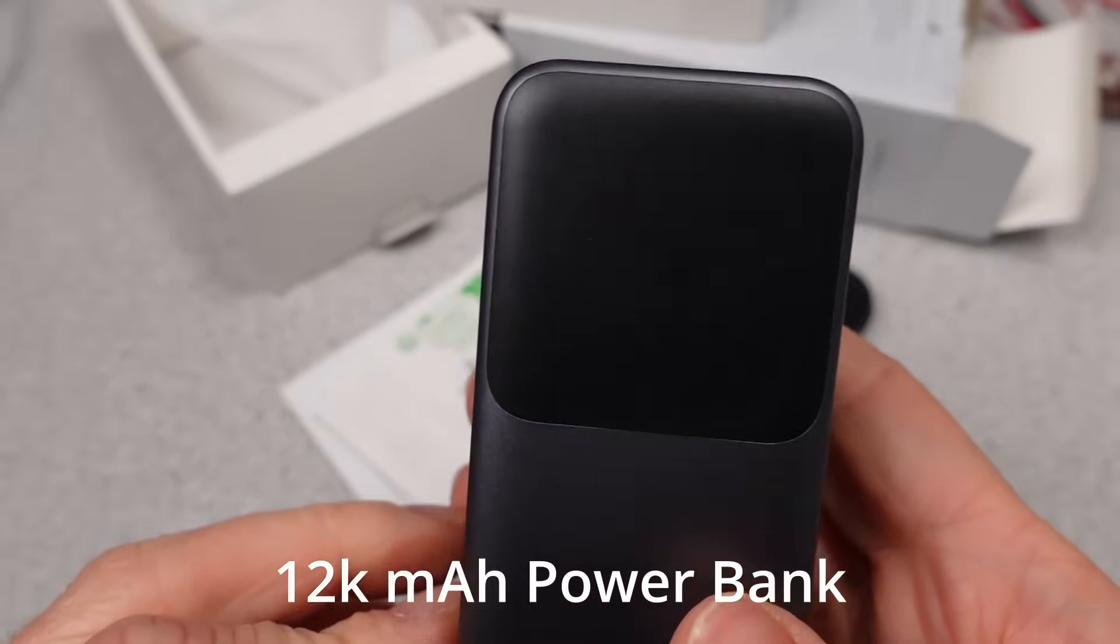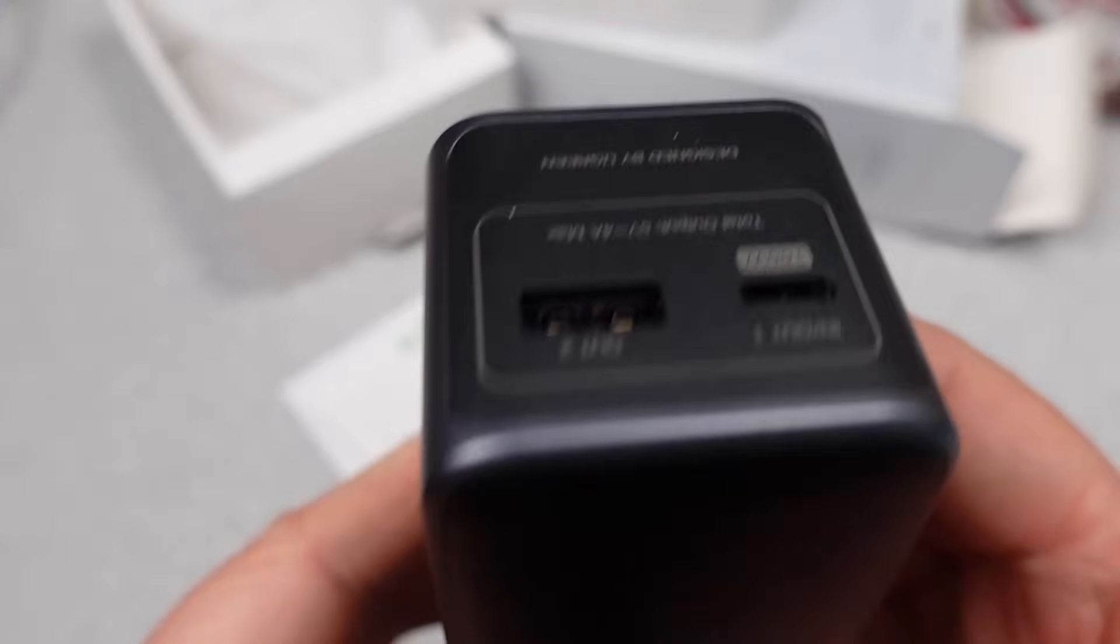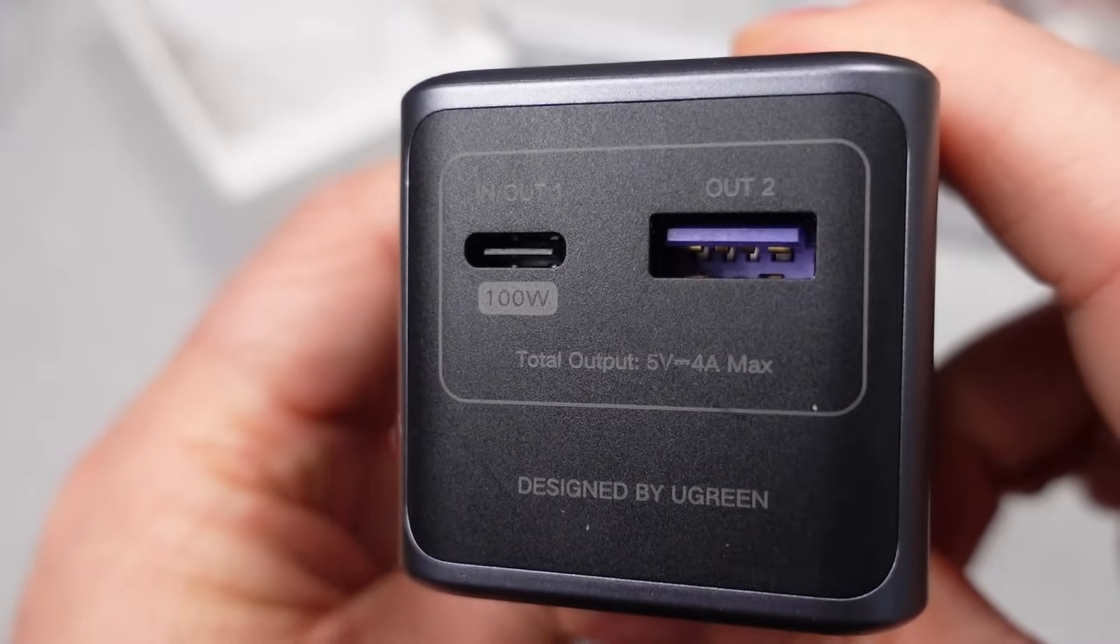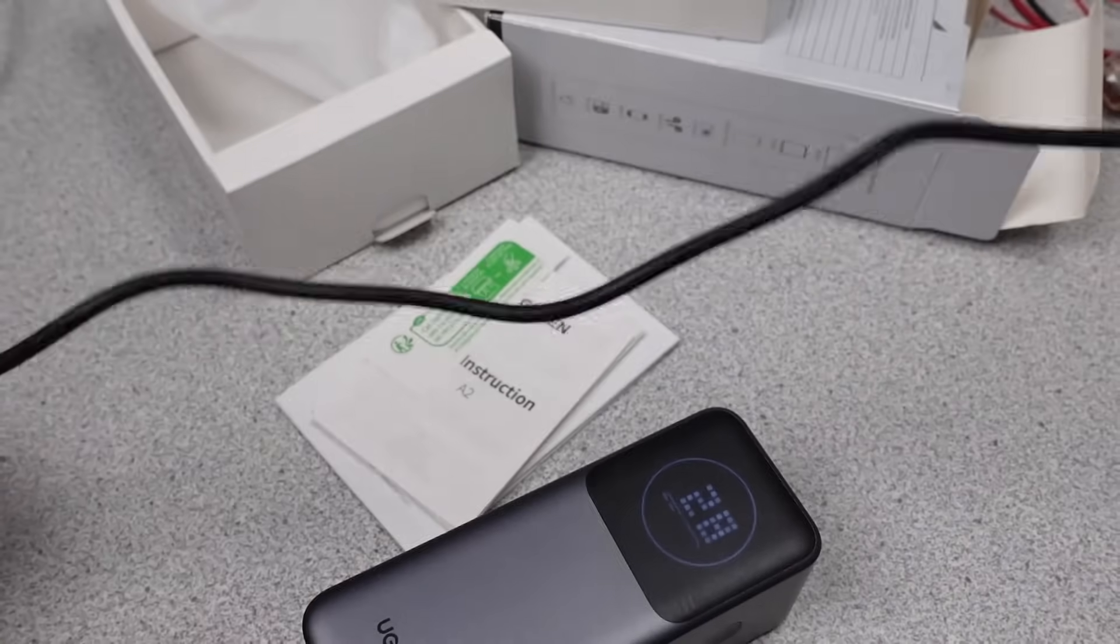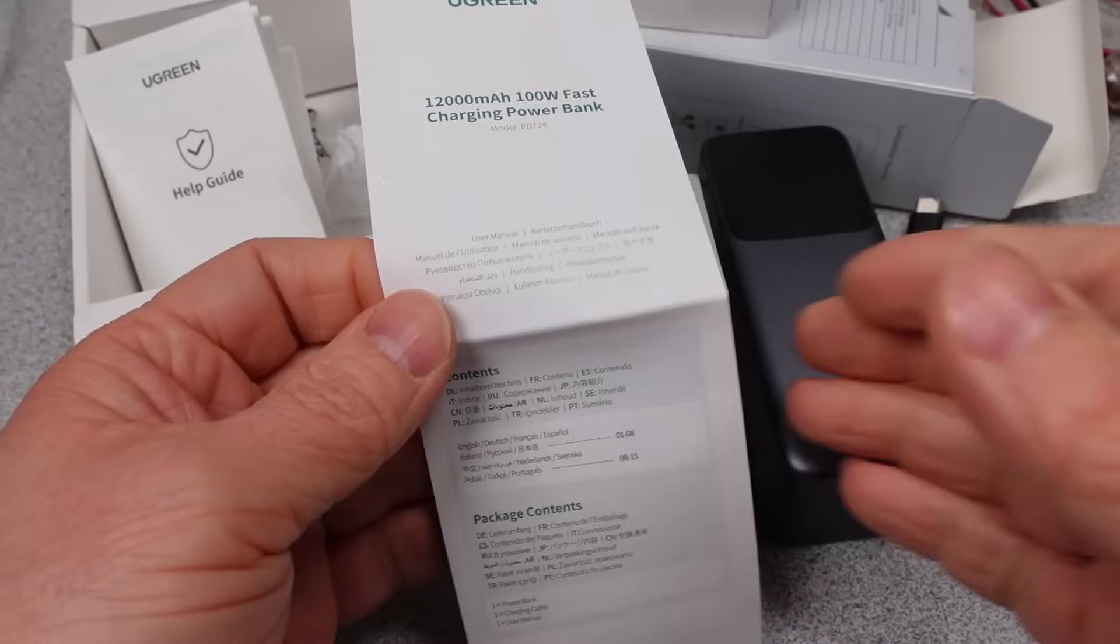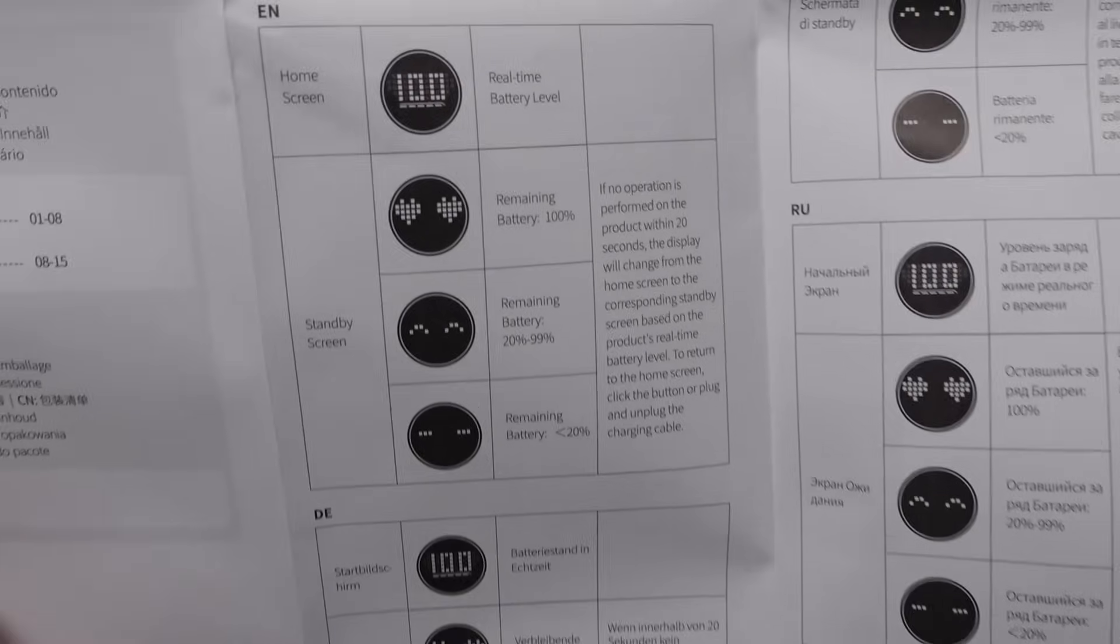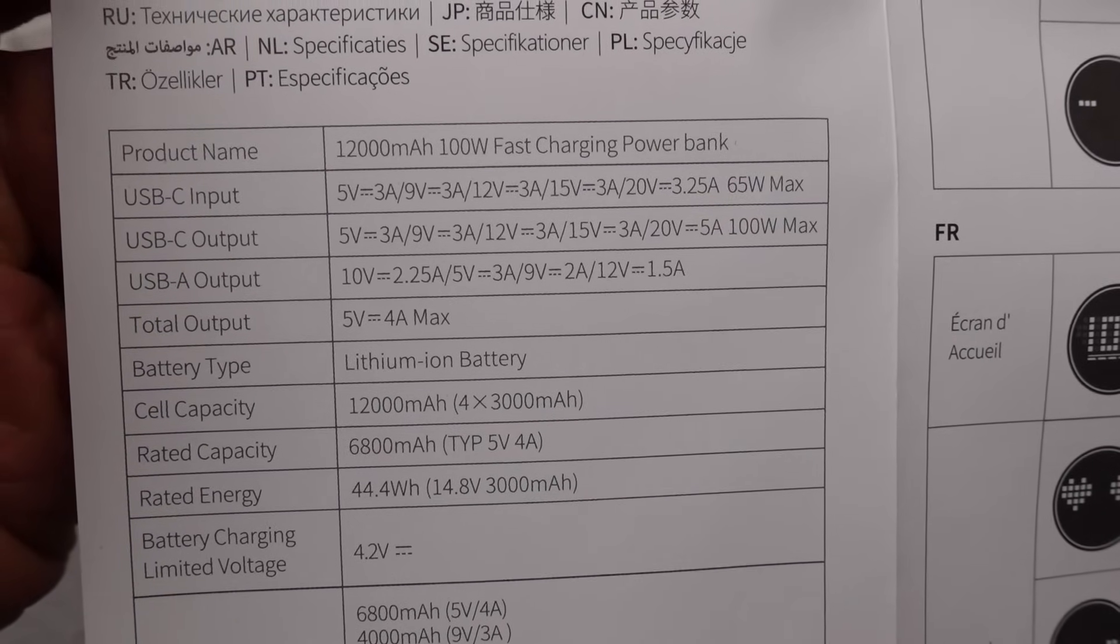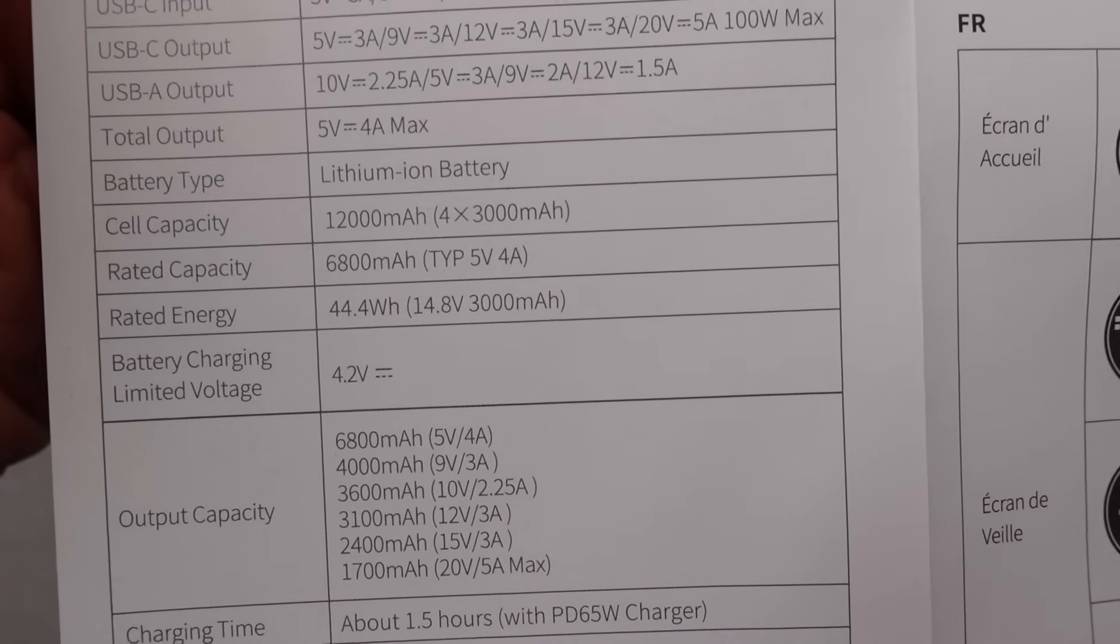First up is the 12,000 milliamp hour 100 watt Ugreen Power Bank. The power bank is a moderate size and has a generous amount of output modes. It comes with a two foot USB cable and a gigantic power user manual. I guess they really wanted to cover the globe literally in paper. Anyway, it does give some specifications that are welcome.